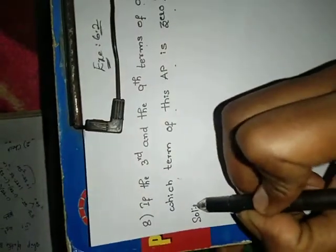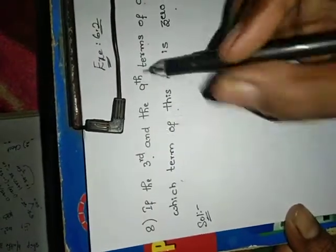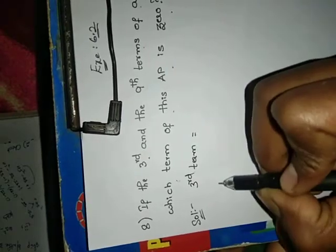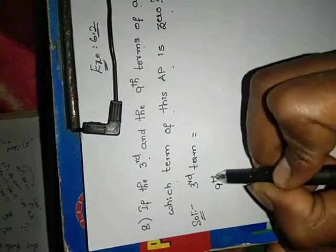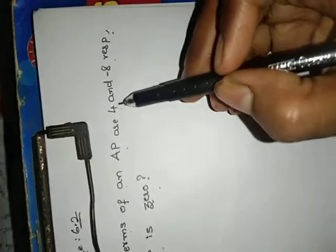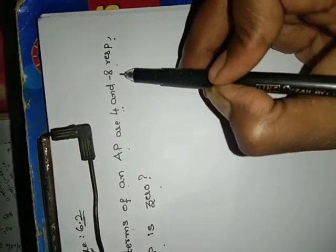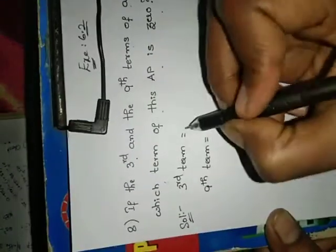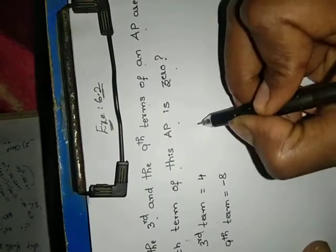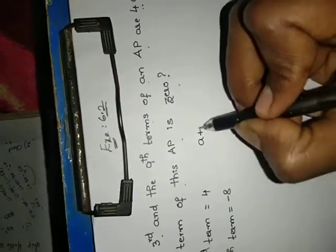What they have given? 3rd term and 9th term. How much is the 3rd term? 4, and 9th term is minus 8. Normally how can we write the 3rd term? A plus N minus 1 into D. N means 3, so 3 minus 1 = 2D.